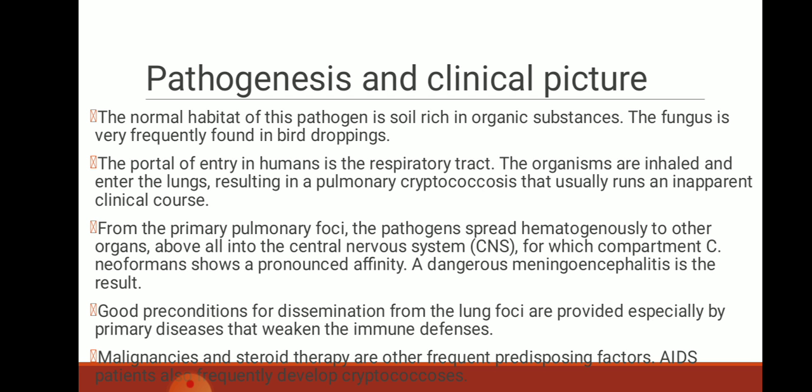Regarding pathogenesis and clinical picture: the normal habitat of this pathogen is soil rich in organic substances, and it is very frequently found in bird droppings. The portal of entry in humans is the respiratory tract. The organisms are inhaled and enter the lungs, resulting in pulmonary cryptococcosis that usually runs an inapparent clinical course.